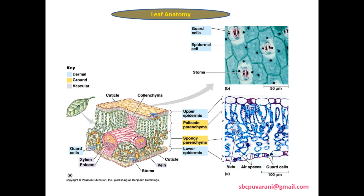Leaf anatomy consists of upper epidermis, palisade parenchyma, spongy parenchyma and lower epidermis. Both the upper epidermis and lower epidermis surfaces consist of a cuticle, which is a protective layer. Centrally, it consists of a vascular bundle made up of xylem and phloem.